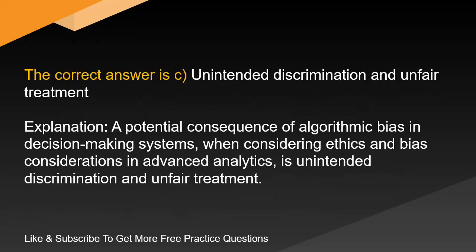The correct answer is C: unintended discrimination and unfair treatment. A potential consequence of algorithmic bias in decision-making systems, when considering ethics and bias considerations in advanced analytics, is unintended discrimination and unfair treatment.